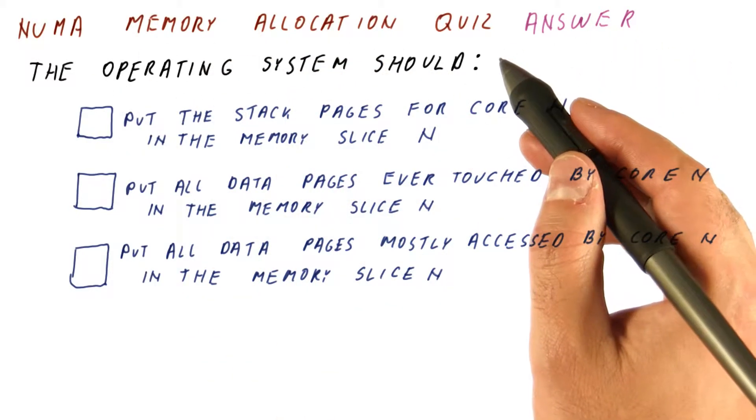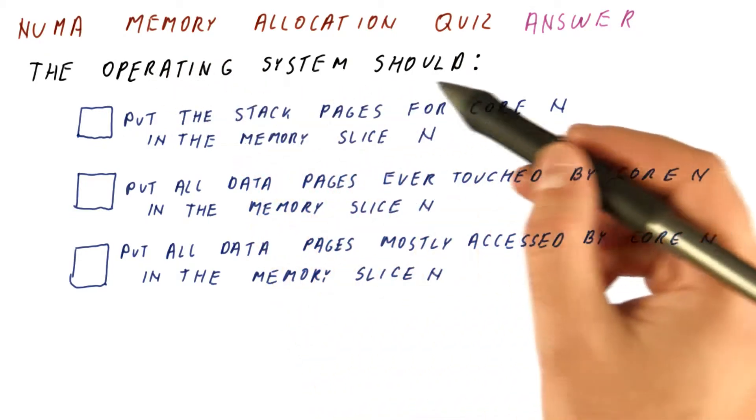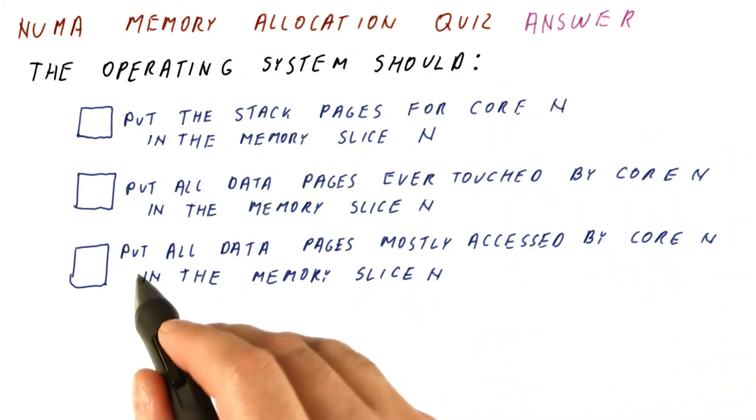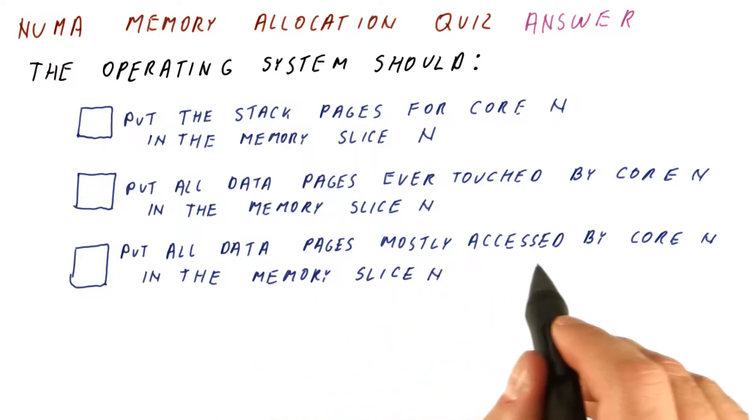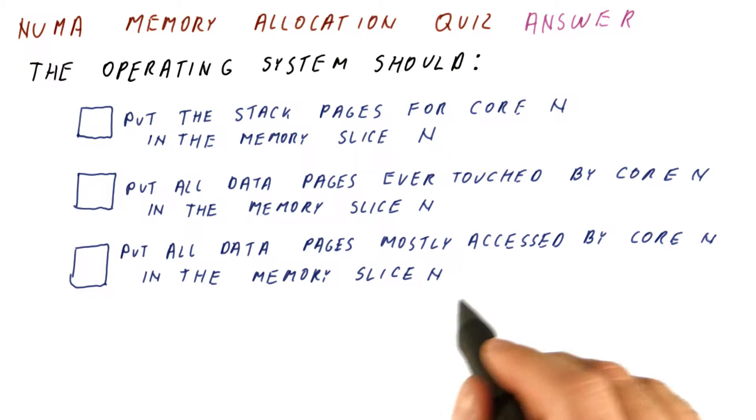Let's answer our NUMA memory allocation quiz. In order to improve performance of a NUMA machine, the operating system should really put all data pages that are mostly accessed by a single core in the memory slice local to that core.